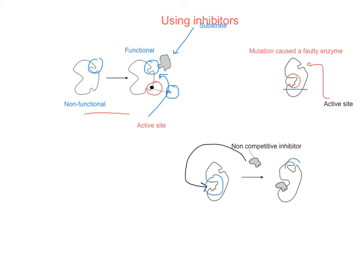The consequence of that is, when it binds on there — like non-competitive inhibitors do — it changes the shape of the active site and effectively turns that enzyme back into its non-functional form.